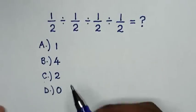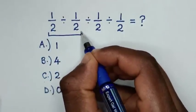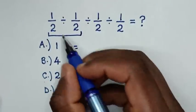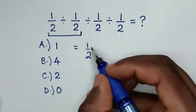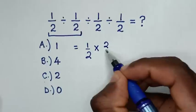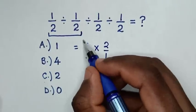So first we'll start to deal with this first operation. Then it will be equal to 1/2 ÷ 1/2, which is the same as × 2/1, then bracket,